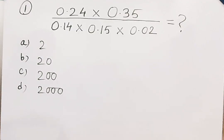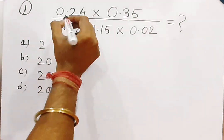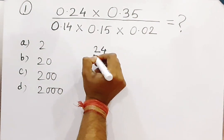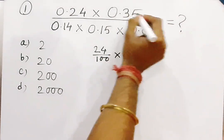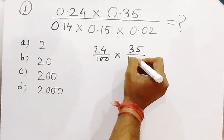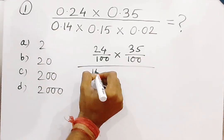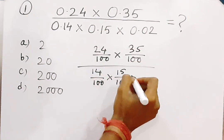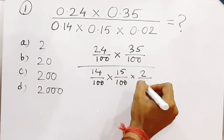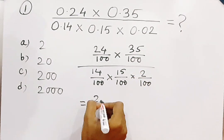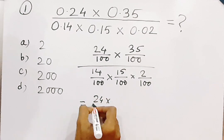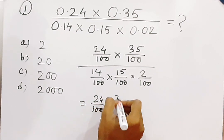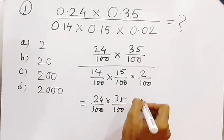The question is 0.24 × 0.35 × 0.14 × 0.15 × 0.02 equals question mark. So 0.24 will be 24 by 100, 0.35 means 35 by 100, 0.14 means 14 by 100, 0.15 means 15 by 100, and 0.02 means 2 by 100.